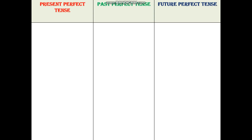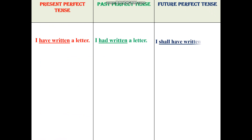We come down to the perfect form. Let's consider present perfect tense, past perfect tense and future perfect tense. First example of present perfect tense: I have written a letter. I had written a letter. I shall have written a letter. We see that the verb is in the third form. He has eaten an apple.